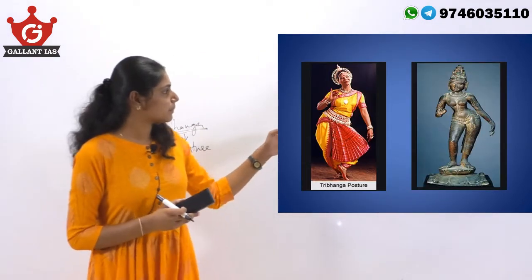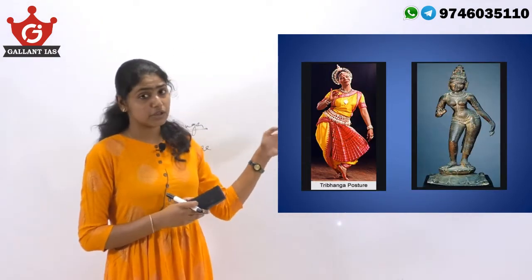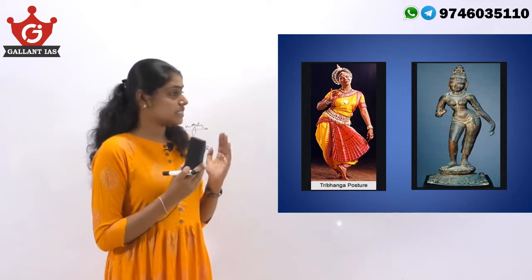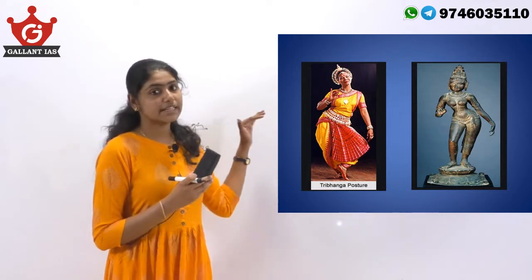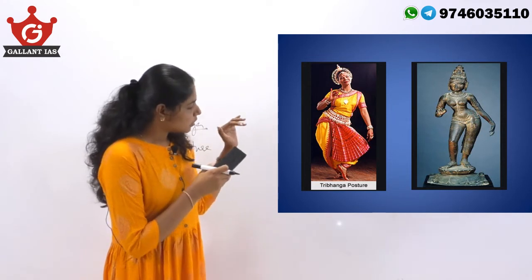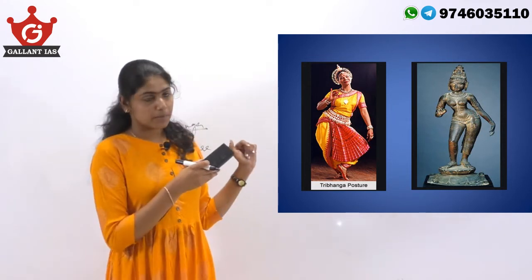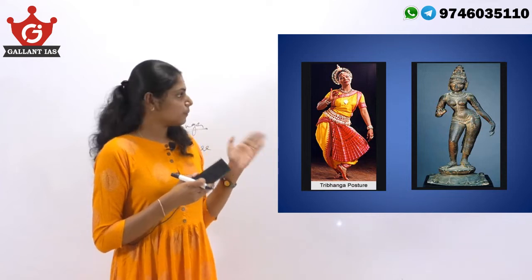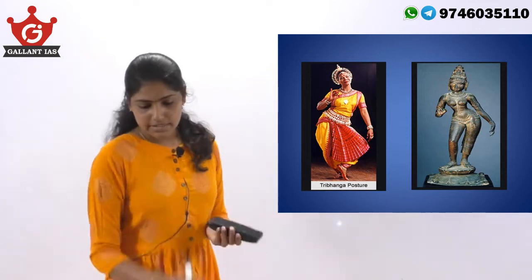You can see this is a peculiar posture which is seen in the Odissi dance form where you can see three bends in the body of the performer. This is the Thribanga posture, and the same can be seen with regard to Indian sculptures also.